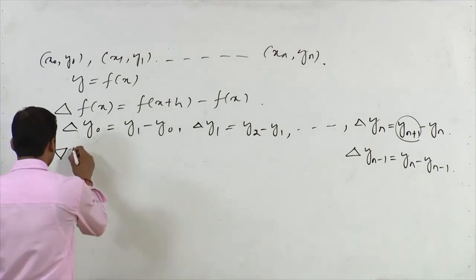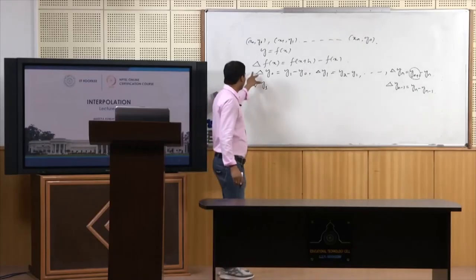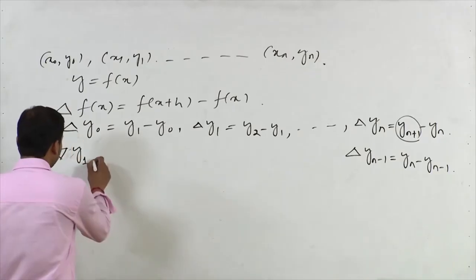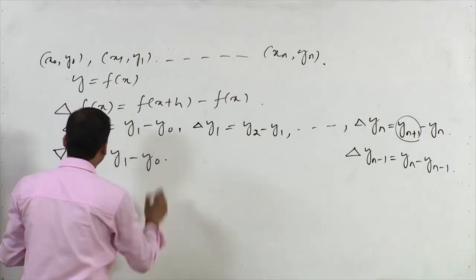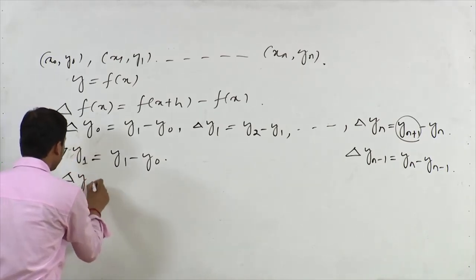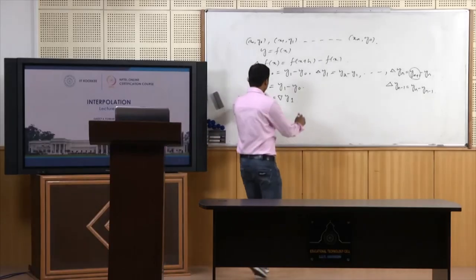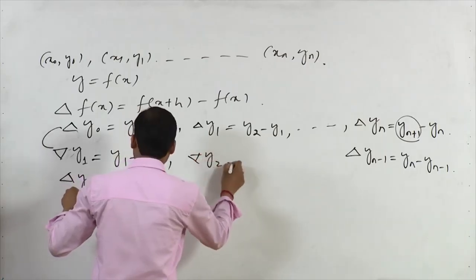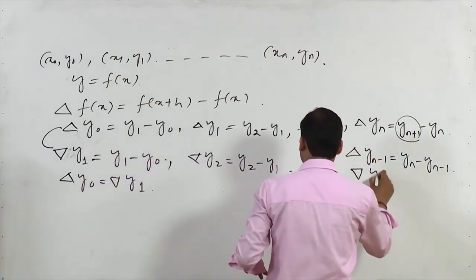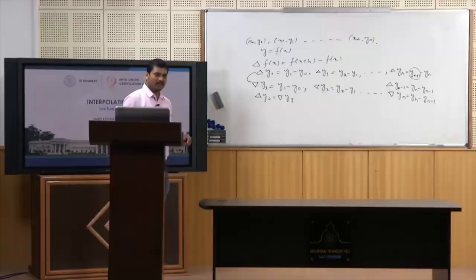The backward difference operator uses the nabla symbol. Delta moves functional values forward, while nabla moves them backward. We can relate the operators: delta(y0) = nabla(y1). The backward differences are: nabla(y2) = y2 - y1, and nabla(yn) = yn - y(n-1).